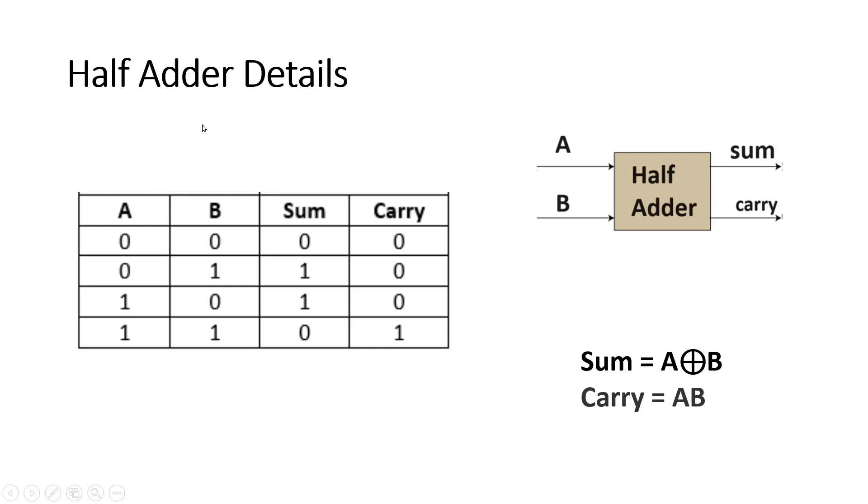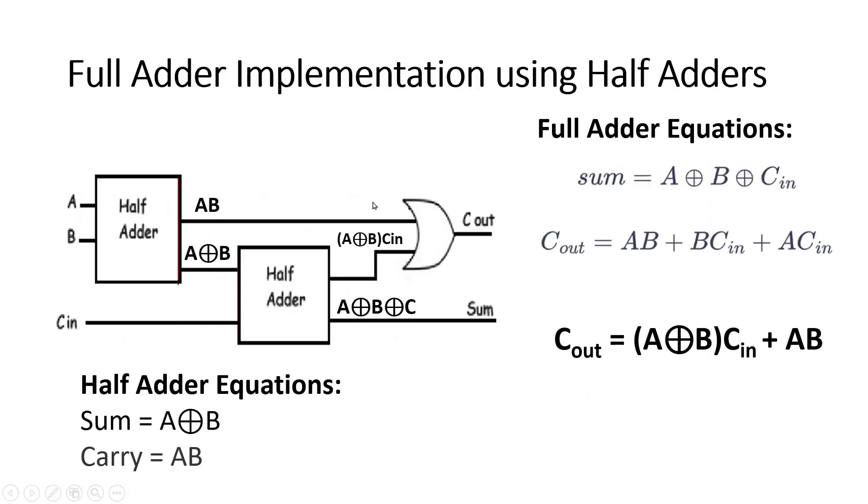This is the final implementation of a full adder using half adders. Here we need two half adders and one OR gate, so this is the minimum area that we need. If we see the expressions of half adder very carefully, sum is equal to A XOR B. And if we see the expression of full adder, sum is equal to A XOR B XOR C in. That means if you use the first half adder it will give us A XOR B, and carry will give us AB.